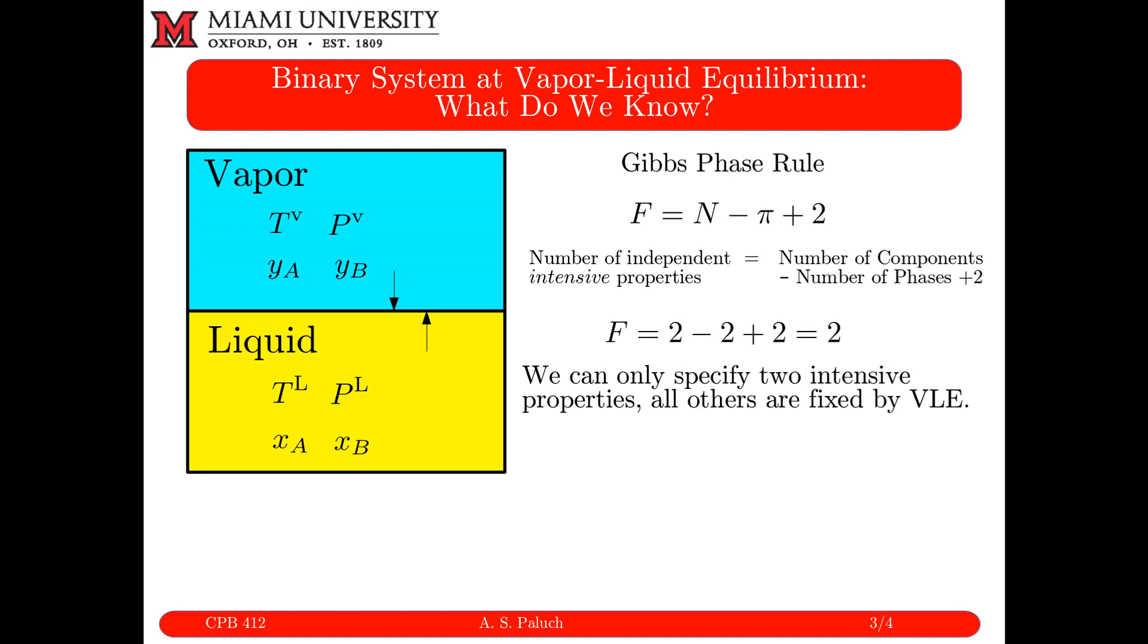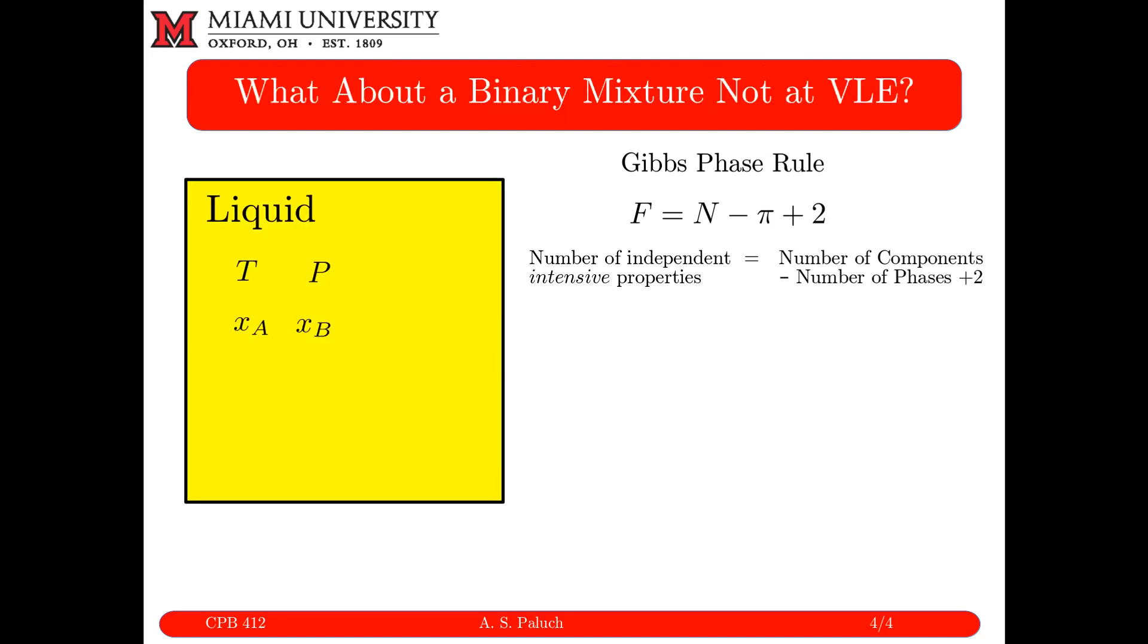So it could be temperature and composition, could be pressure and composition, could be temperature and pressure. But if I say this binary mixture is at vapor-liquid equilibrium at this temperature and pressure, that's enough to fix the state of my system.